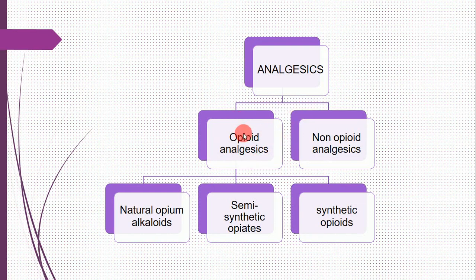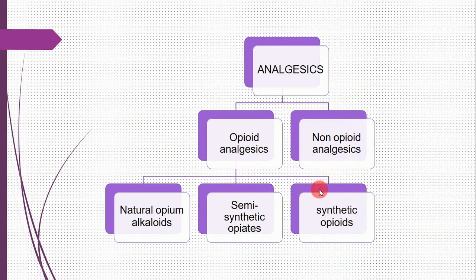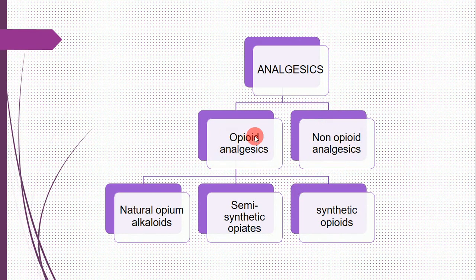Opioid analgesics are those drugs which can relieve the pain sensation as well as cause or produce sleep. Non-opioid analgesics are those analgesics which can relieve the pain sensation but do not cause sleep.